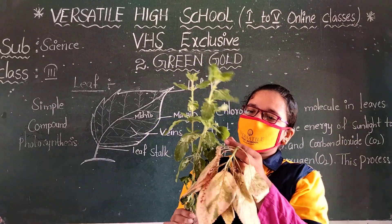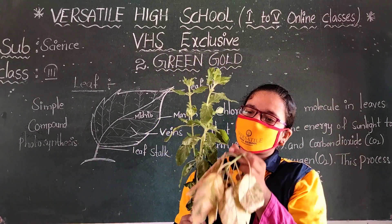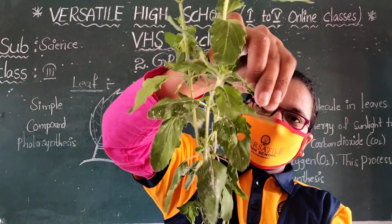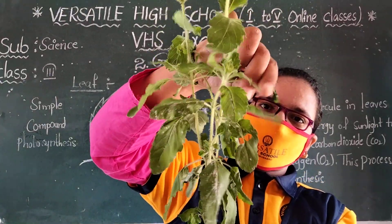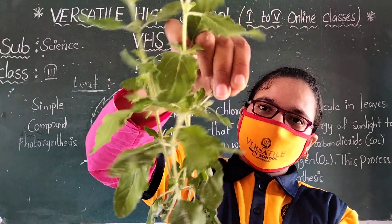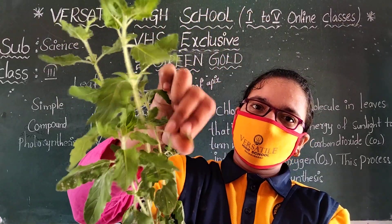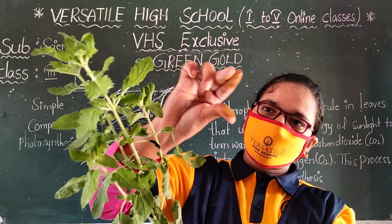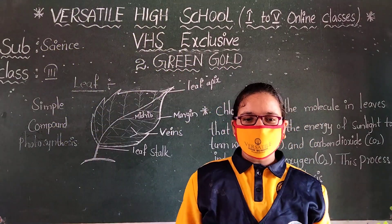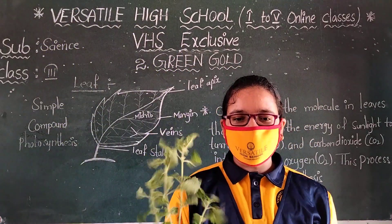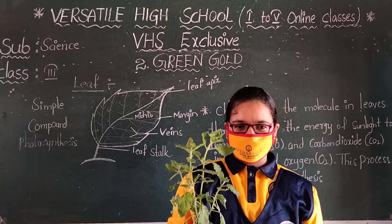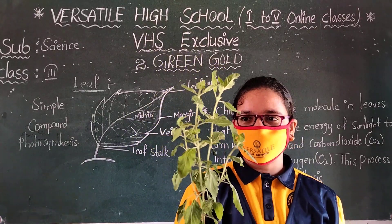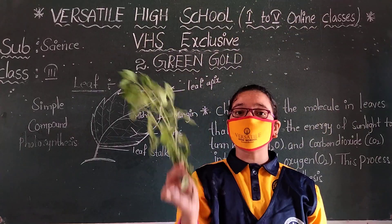Are you seeing it? Once you rub it — what is this? Water. Are you seeing it? Inside the veins, leaves are the powerhouse of plants.